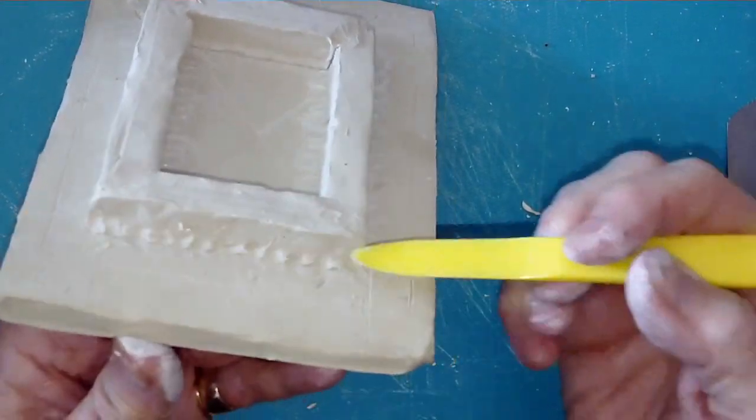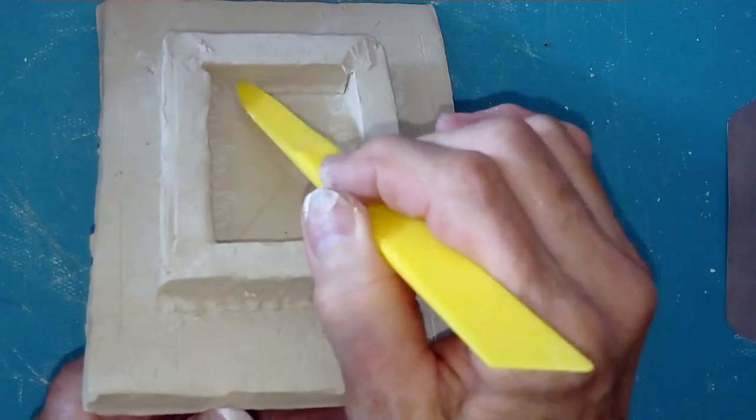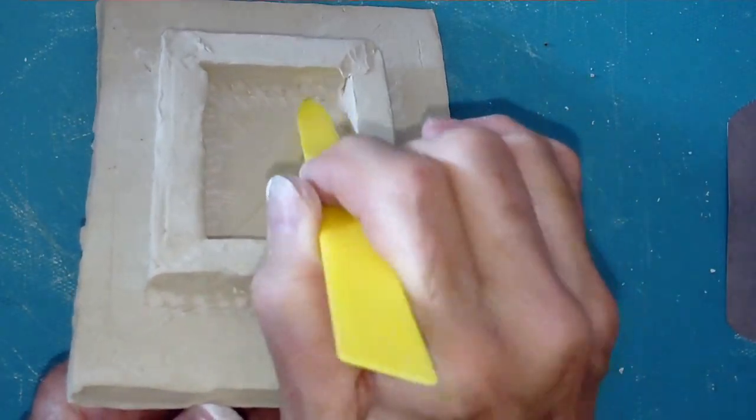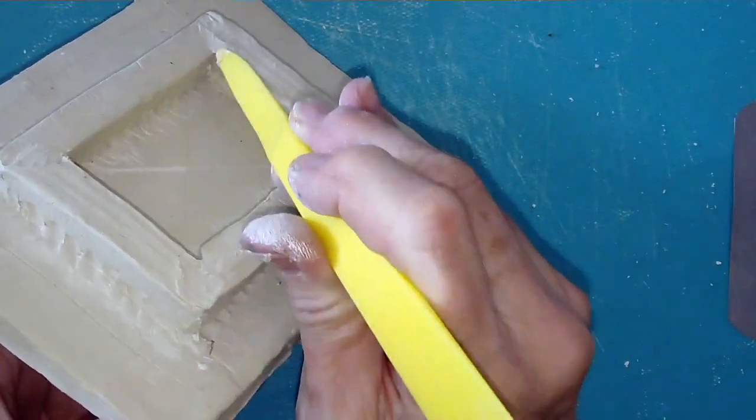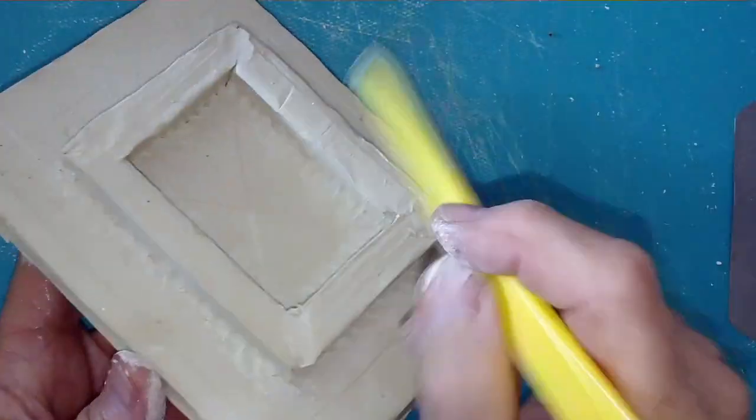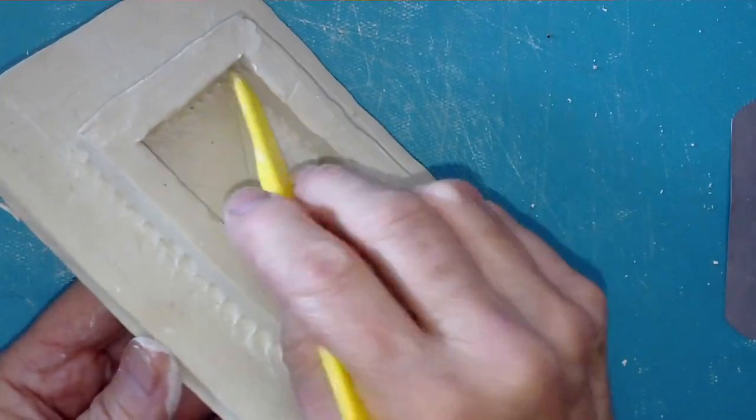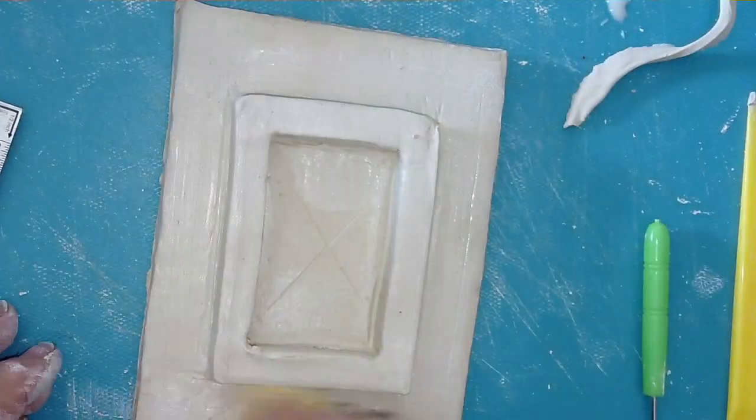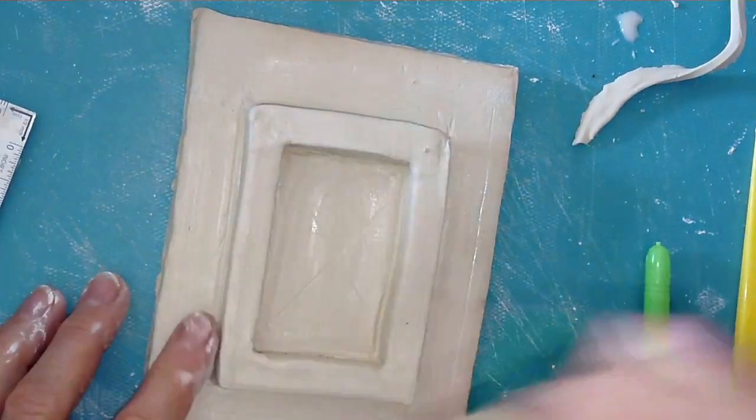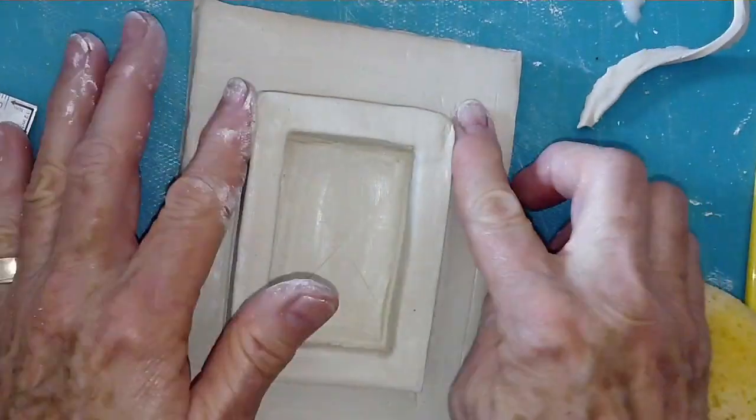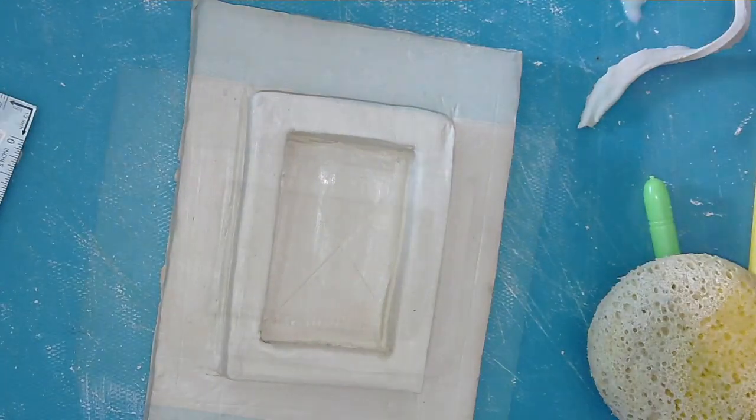Take your time and go slowly and carefully so you don't distort the flange. Make sure you get the inside corners as well. Then you can smooth it over with a damp sponge and make sure it's nicely connected and it looks good.